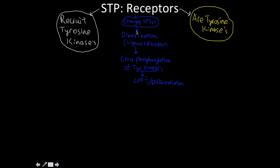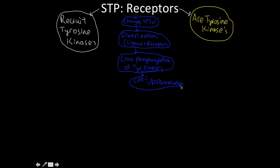To review: changes in quaternary level structure are the phenomenon here. We're talking about dimerization upon ligand binding to the receptor site, which results in cross-phosphorylation of the tyrosine kinases. Tyrosine kinases ultimately play roles in cell division and cell differentiation.